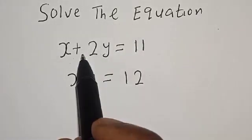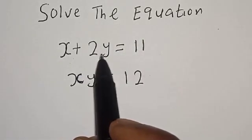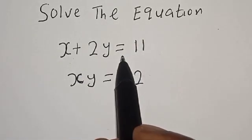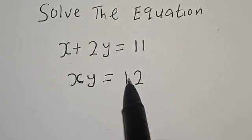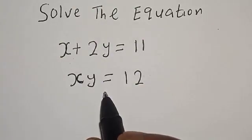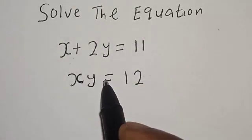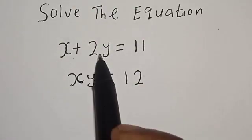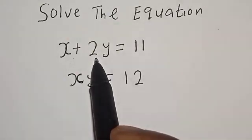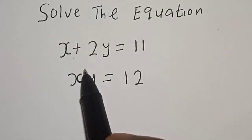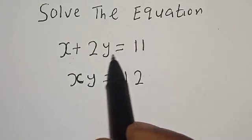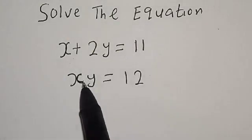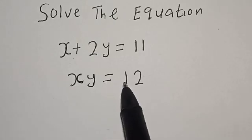Solve the equation: x plus 2y is equal to 11, and xy is equal to 12. Hi everyone, welcome to my class. In this class, we want to solve this equation quickly. x plus 2y is equal to 11 and xy is equal to 12.